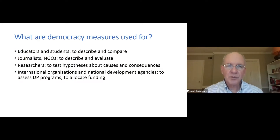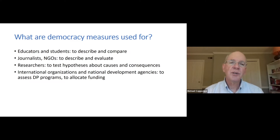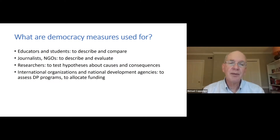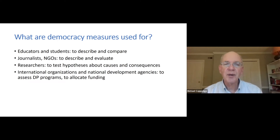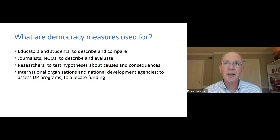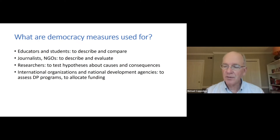As Schultz emphasized, democracy measures are used for a lot of purposes. Educators and students use them to describe and compare trends in countries. Journalists and NGOs use them to describe and evaluate what's going on in the world. Researchers need indicators to test hypotheses about the causes and consequences of democracy. And probably most consequentially, a lot of international organizations and national development agencies are now using democracy indicators to assess their democracy promotion programs and even to allocate funding to figure out which countries they consider worthy to receive investments.